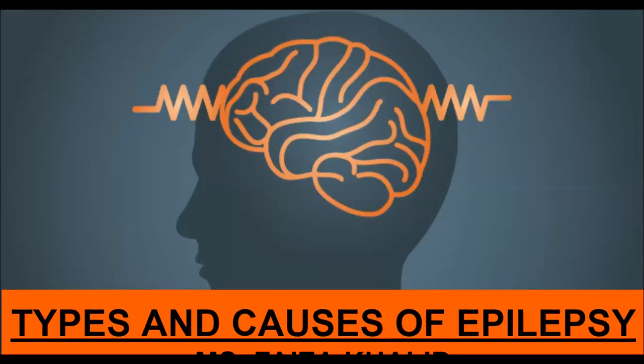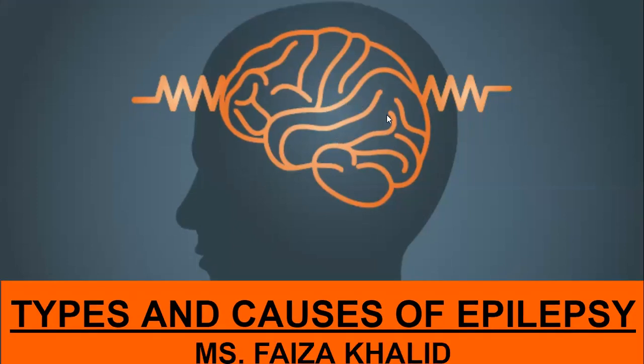Today's lecture is based on types and causes of epilepsy. The background image shows a zigzag line, indicating activity spreading in the brain — that's what epilepsy is all about. Normally we find people falling on the floor and having jerks. These are the layman observations, and the only observations when one sees a person going through epilepsy or an epileptic attack.